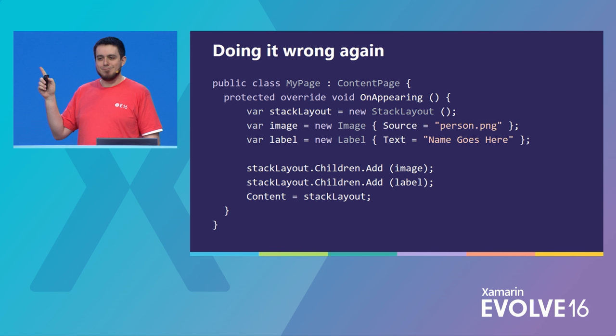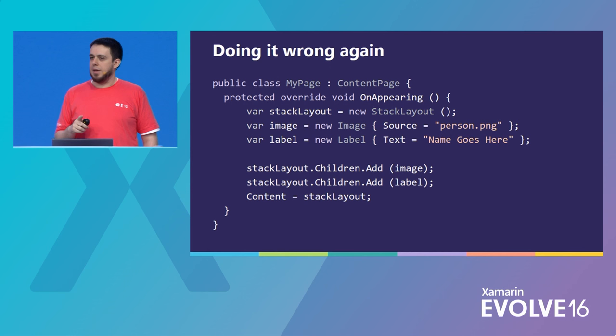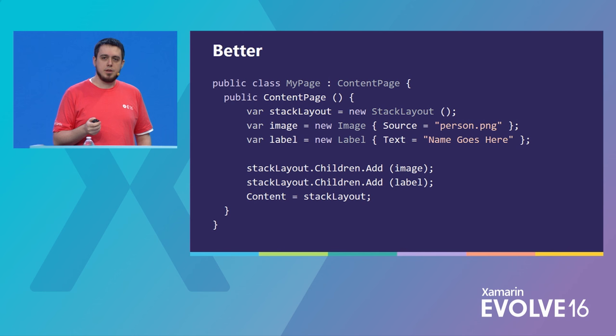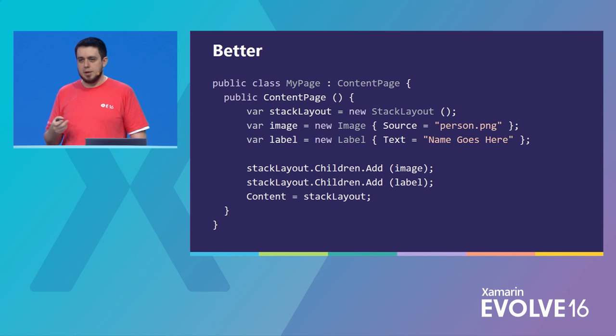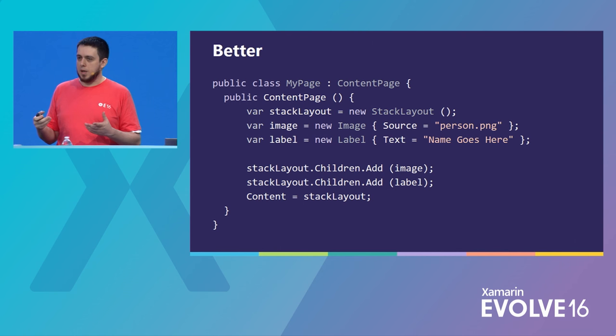Another place you can do this wrong, a little more subtle, is if you use the onAppearing event. A lot of people pack views in onAppearing because this is normal in UIKit on iOS. The better approach is to actually do it in the constructor of your page. Xamarin.Forms just creates tiny little objects — they're pretty cheap. The expensive objects are created when we realize the renderers, and that's all going to happen at the same time anyway. This way, you don't pay an extra layout cycle or two.